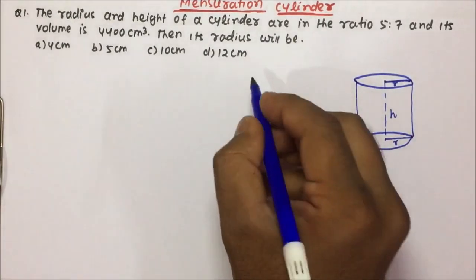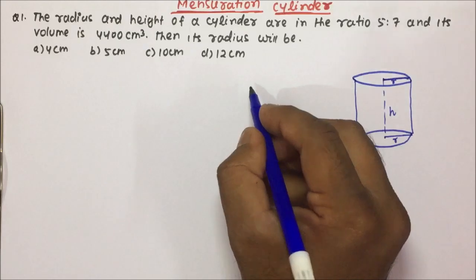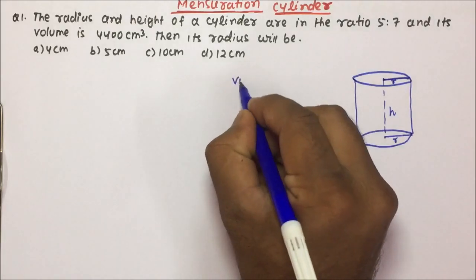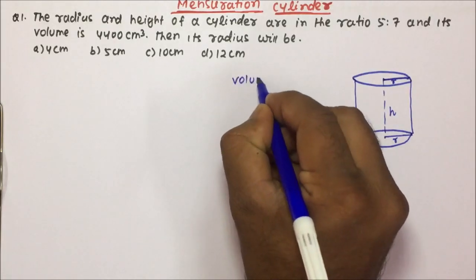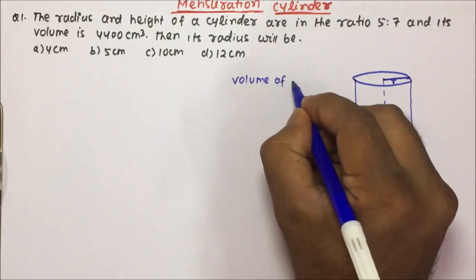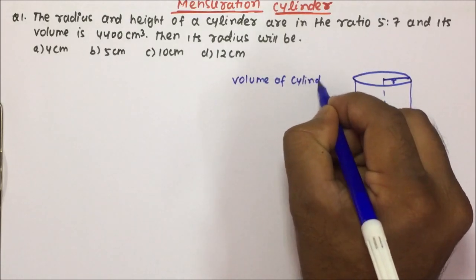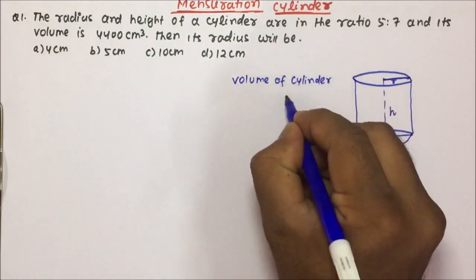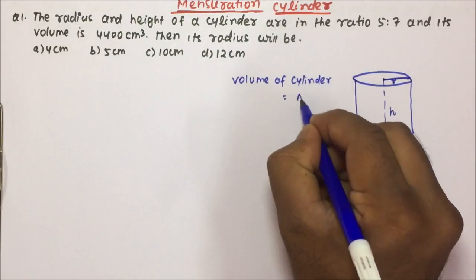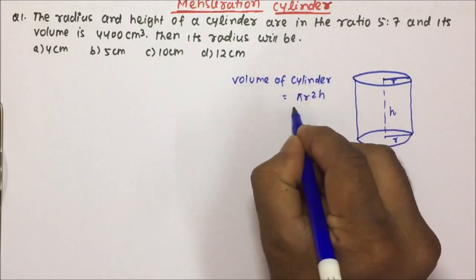Now, if we talk about the volume of the cylinder, the volume of the cylinder will be equal to pi r square h.